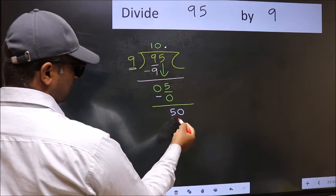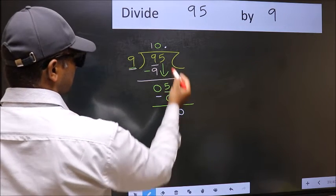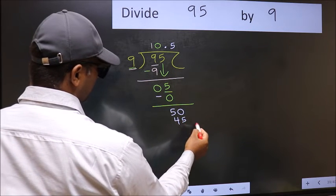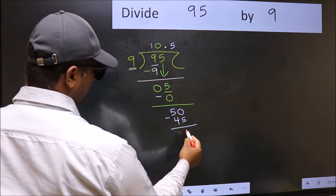So, 50. A number close to 50 in the 9 table is 9 times 5, which is 45. Now you subtract. You get 5.